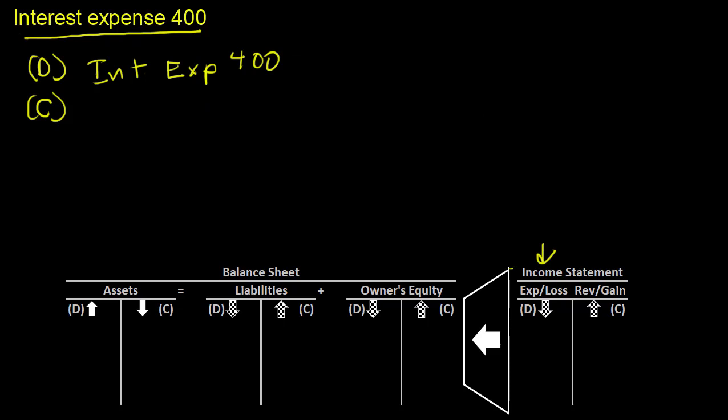Well, in that case, that's called writing an accrual, and the accrual here would be interest payable. So we'd write something like interest payable for $400.